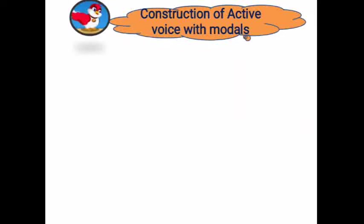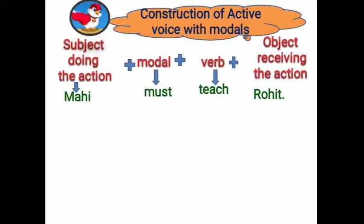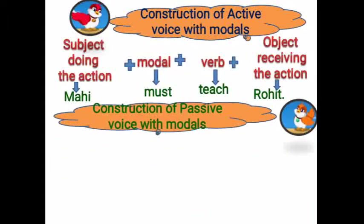Following the same rules of tense forms, we have a few more changes for the construction of active voice with modals. The construction is: subject doing the action + modal + verb + object receiving the action. For example: Mahi must teach Rohit. Here, Mahi is the subject, must is the modal, teach is the verb, and Rohit is the object.